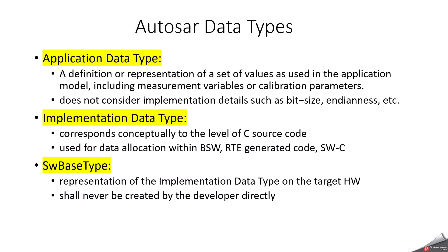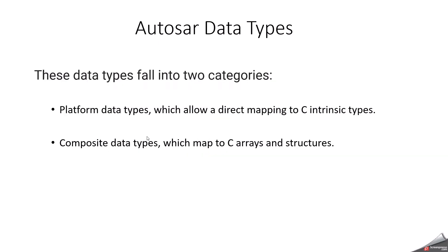The software base type will not be directly created by a developer — it comes as a platform data type, representing the implementation data type on the target hardware. In Autosar, data types fall into two categories: one is platform data types, which allow direct mapping to C language — for example, unsigned 8, unsigned 16, or float. The other is composite data types — for example, when you want to create an array, structure, or union, those are all called composite data types.